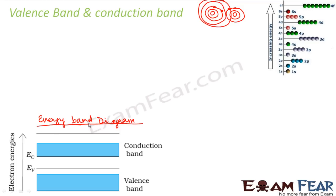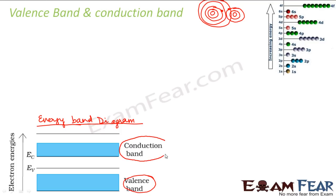On the basis of this energy band diagram, we differentiate between a conductor, a semiconductor, and an insulator. This energy band diagram tells us why semiconductors behave differently than conductors and insulators. Here we have the valence band and the conduction band on the electron energy axis. There are energy levels below the valence band as well, but we are not concerned with them since the inner bands always have electrons and are least impacted. So the valence band is the one that interacts with the conduction band. The valence band consists of valence electrons.